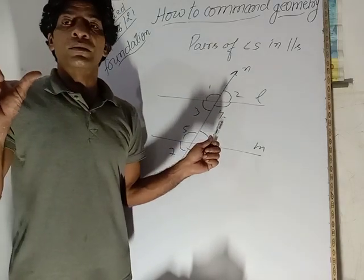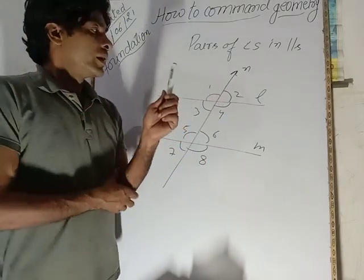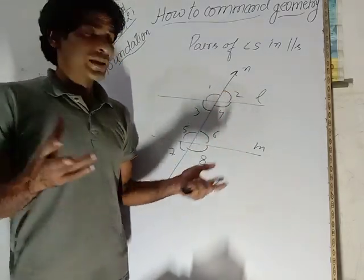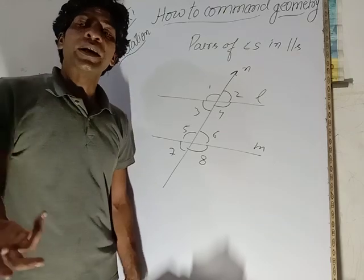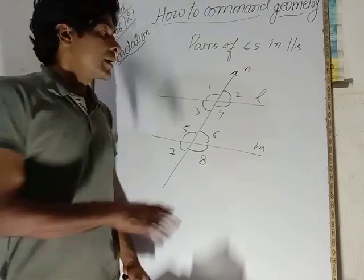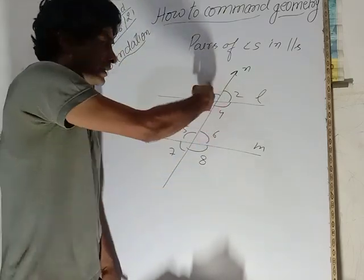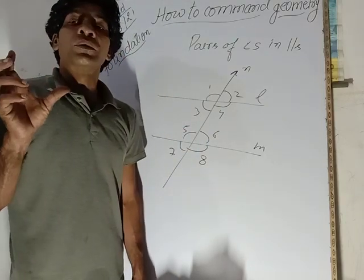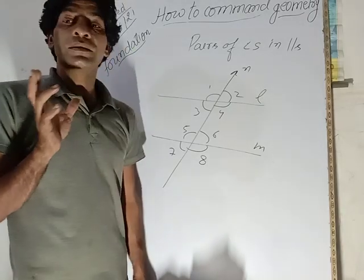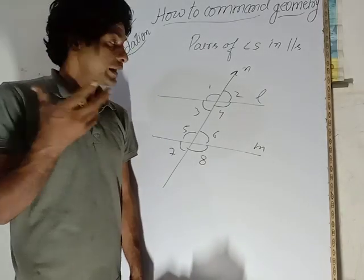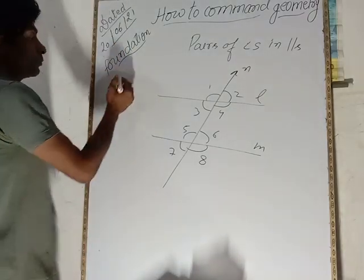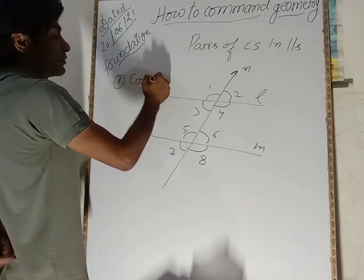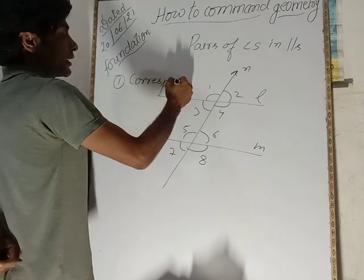There are so many types of pairs of angles you can find here, such as adjacent angles, linear pair angles, supplementary angles, and complete pairs. But the main pairs that are specifically built in parallel lines — the first pair is corresponding angles.